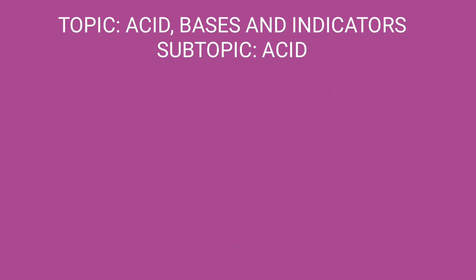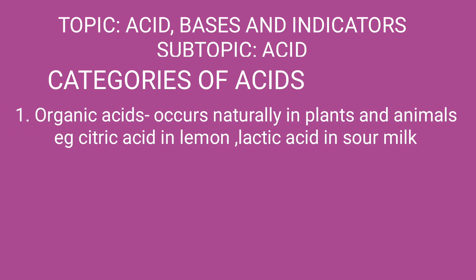Next we look at the categories of acids. We have two main categories of acids: organic acids and inorganic acids. Organic acids are those which are found naturally in plants and animals. For example, citric acid is found in lemon. Another example is lactic acid which is found in sour milk.